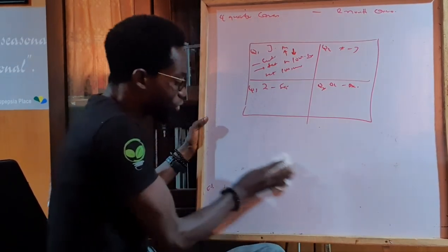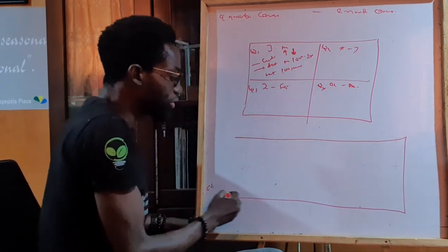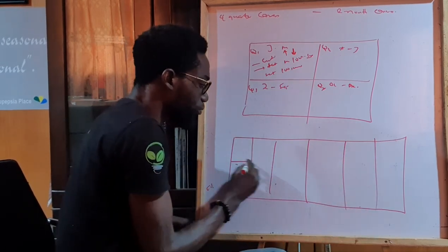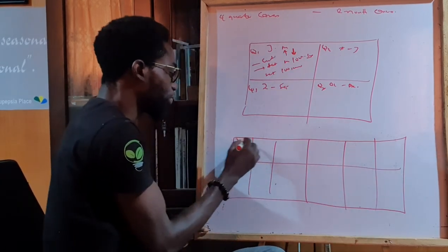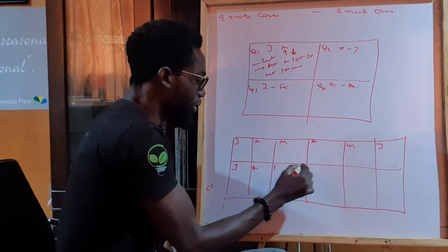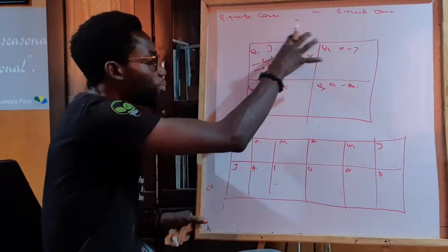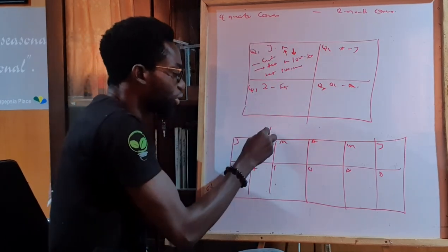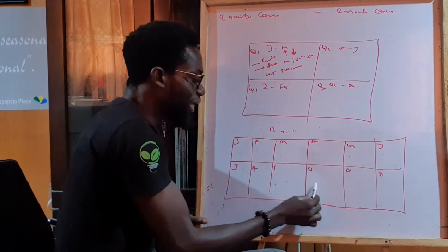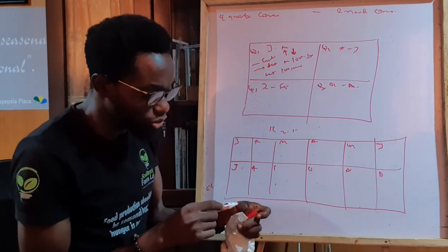When you are done with these, you go ahead and draw the 12 month canvas. If you go to the link already supplied, you will see a canvas already prepared that is easy for you to input. You have January through December. Based on these four quarter quadrants, come to the 12 month canvas and write out what are the things you hope to achieve every month.